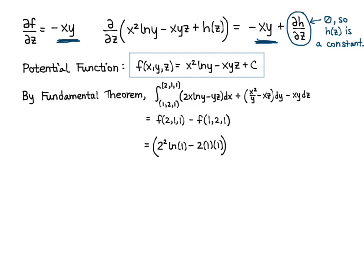With the upper bound (2, 1, 1) plugged in, I get 2 squared natural log of 1 minus 2 times 1 times 1, minus the lower bound (1, 2, 1) giving 1 squared natural log of 2 minus 1 times 2 times 1. This simplifies to negative 2 minus natural log of 2 plus 2, which gives negative natural log of 2 as our result. So if you're presented with an integral and you know it's exact, find the potential function and then use the fundamental theorem.